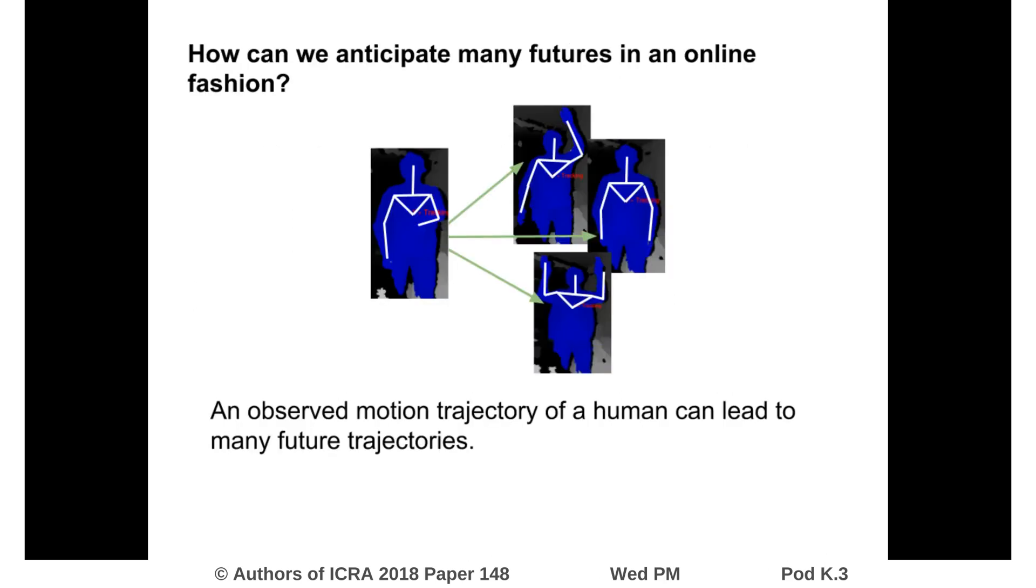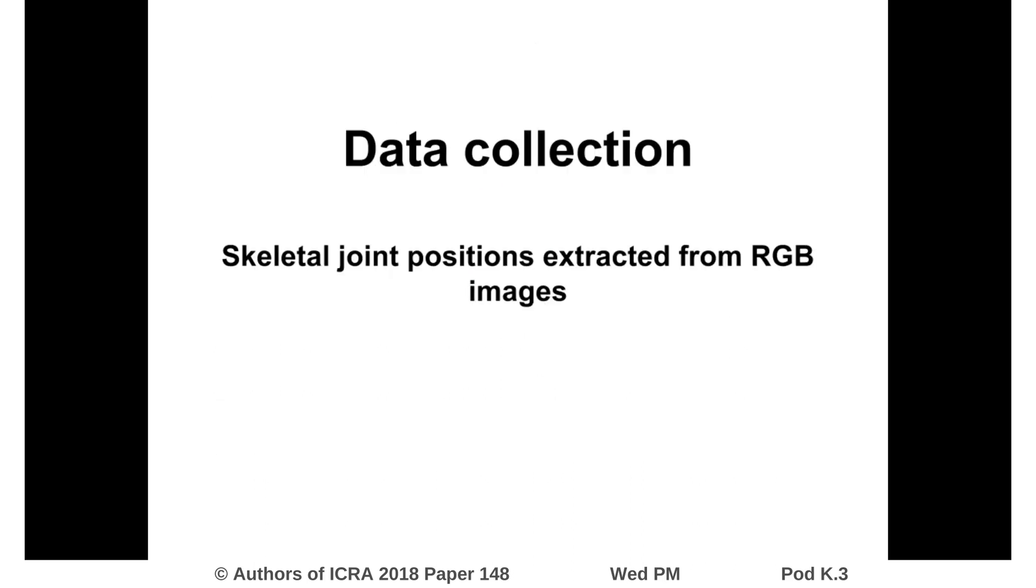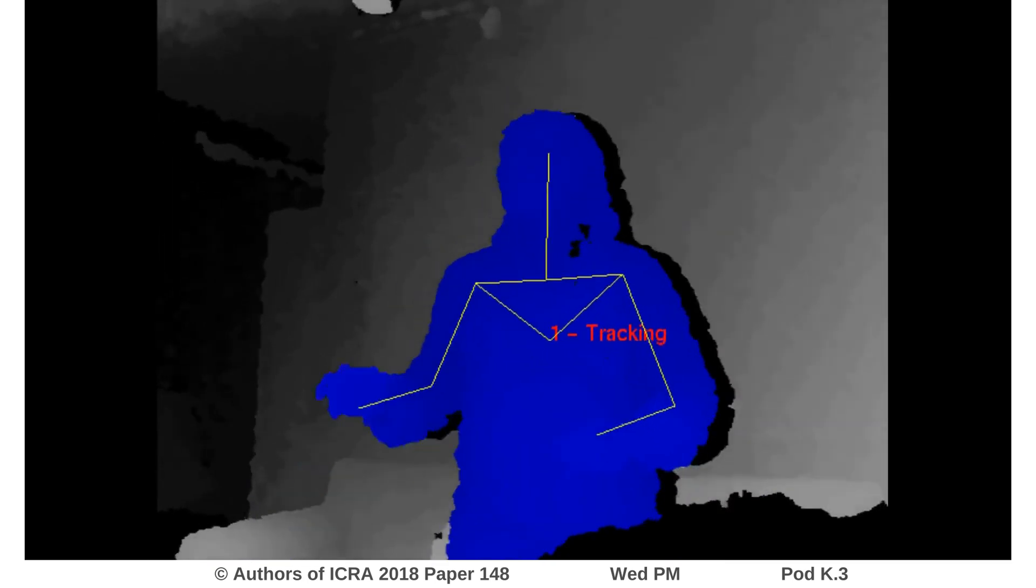Human motion is intrinsically stochastic. Given a past observed trajectory, many future movements are possible. To train our models, we use skeletal joint positions extracted from RGB images. We recorded 100 minutes of natural human movements.